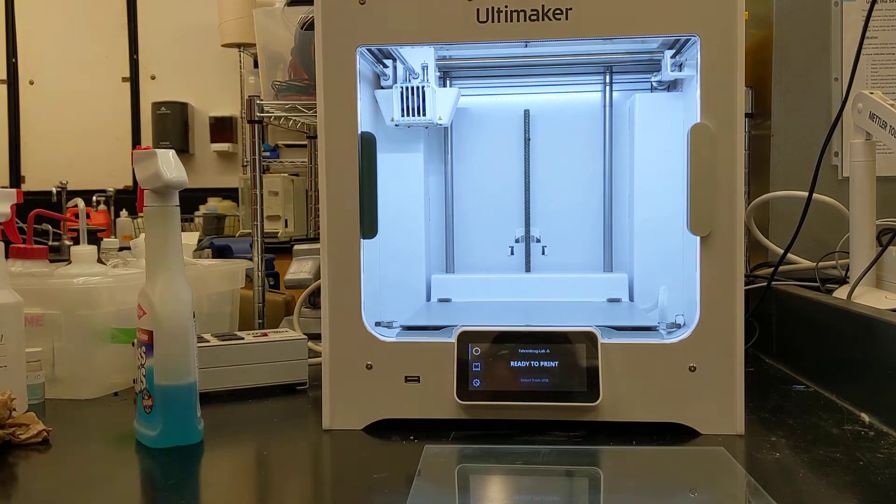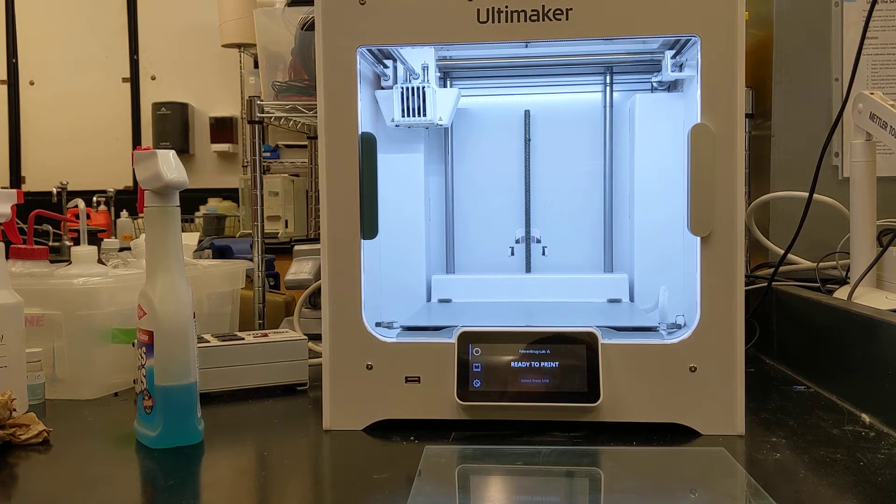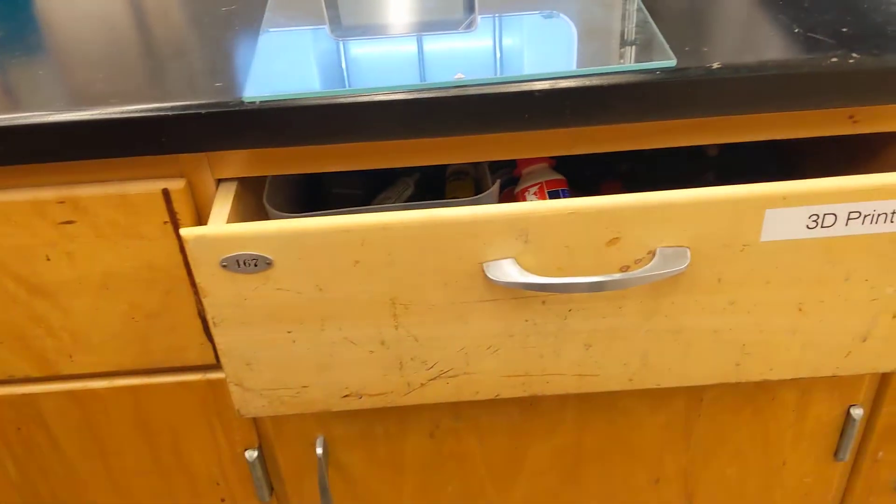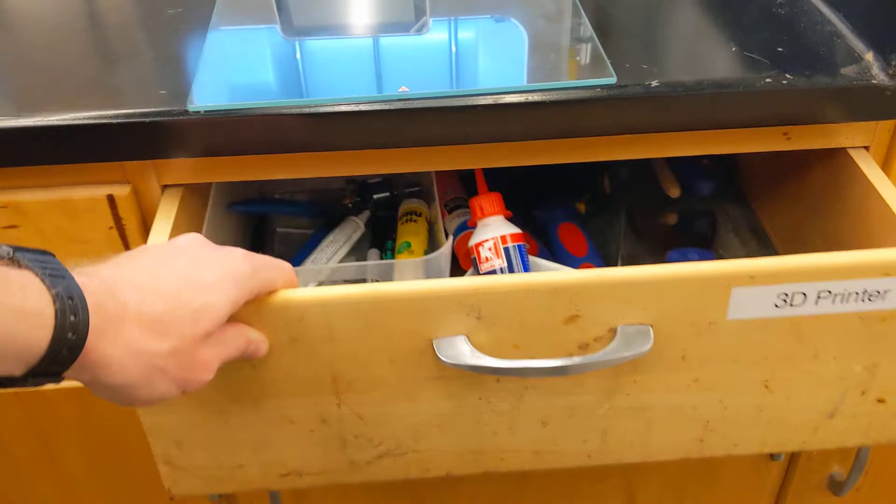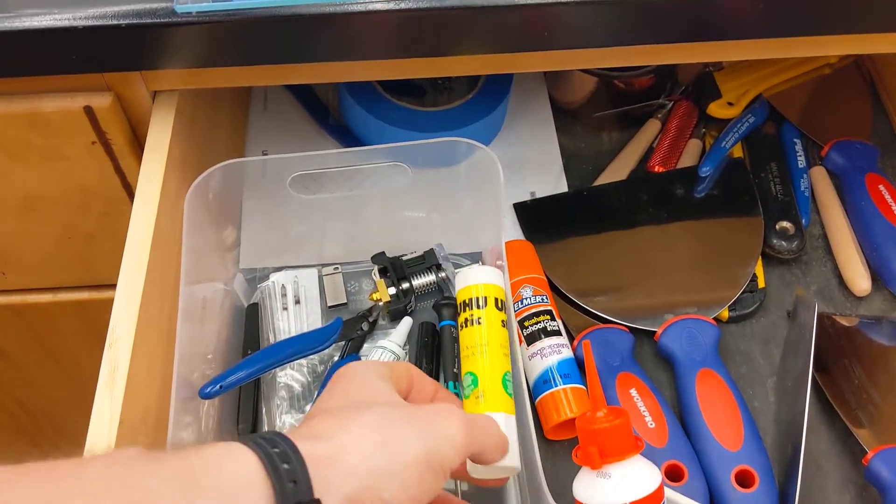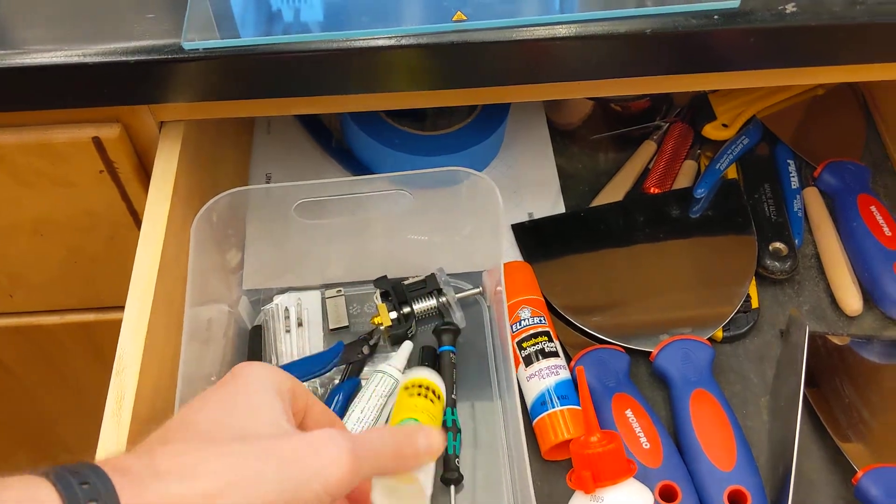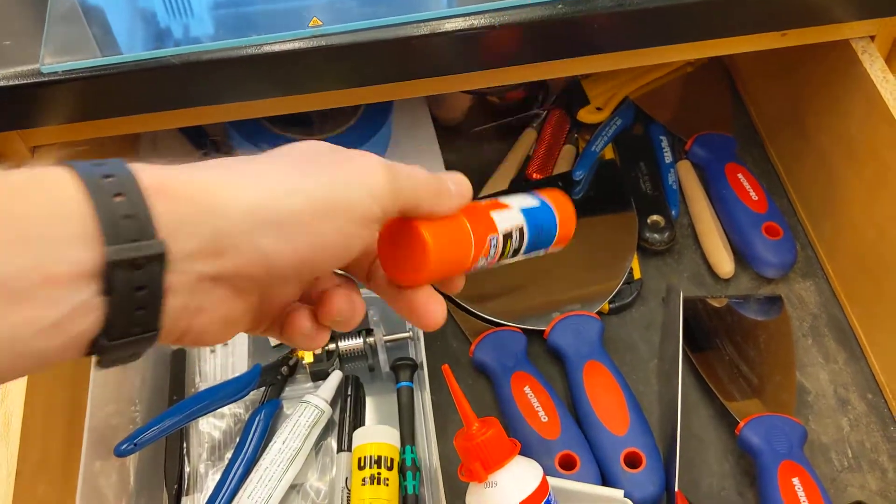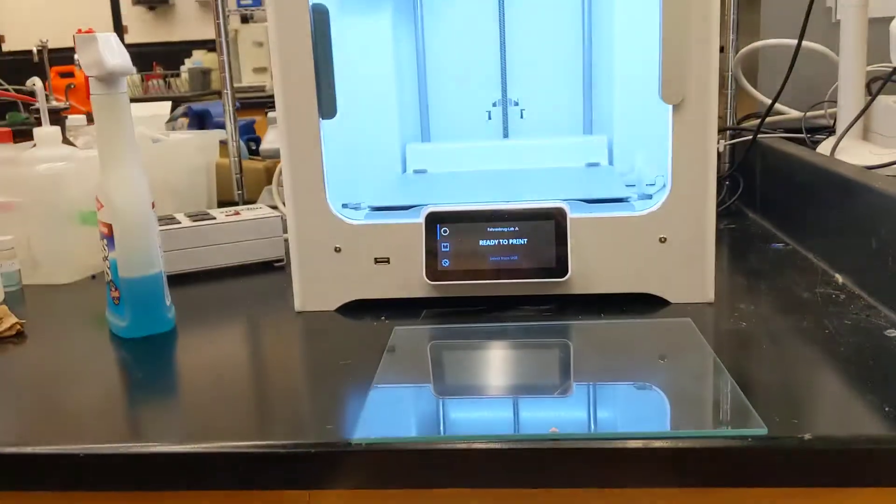Once that's clean, you're going to want to apply your own adhesion material, and I recommend a glue stick. To find the glue sticks, you can go down to the drawer that says 3D printer just below the printer and open this up. There'll usually be a couple sticks in here, either one that looks like this or this Elmer's one here. You'll grab one of these sticks.